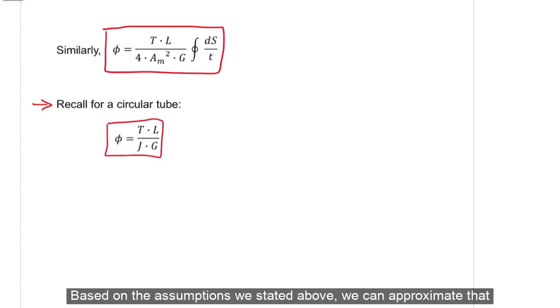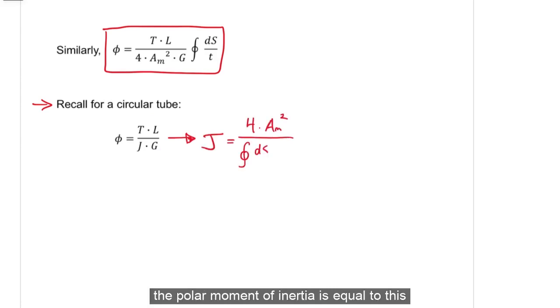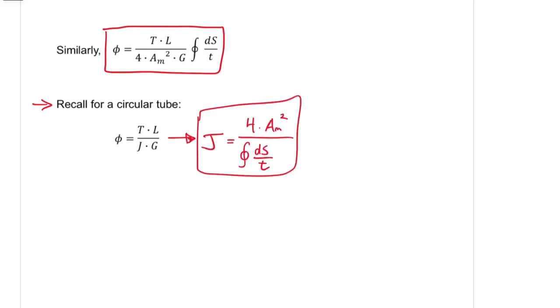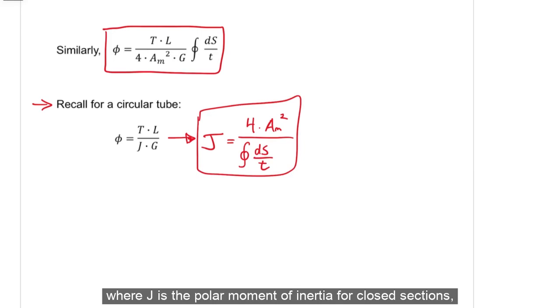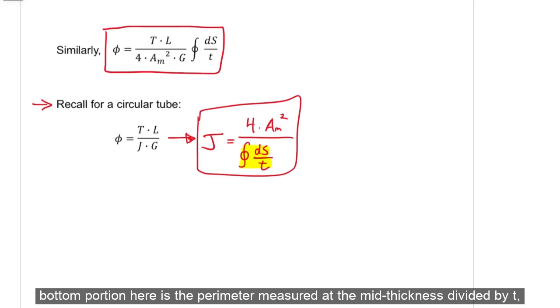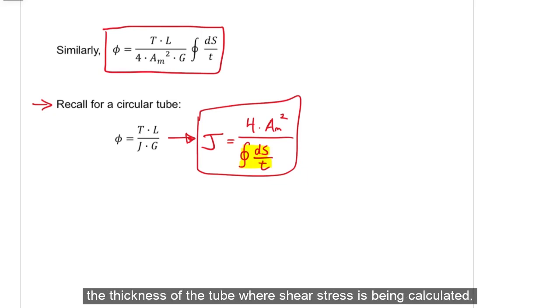Based on the assumptions we stated above, we can approximate that the polar moment of inertia is equal to this. Where J is the polar moment of inertia for closed sections, AM is the area enclosed by the center line of the tube's thickness, and this bottom portion here is the perimeter measured at the mid thickness divided by T, the thickness of the tube where shear stress is being calculated.